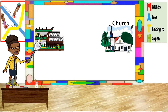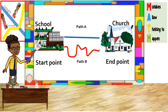In this picture, the start point is the school and the end point is the church. How many paths do you see? There are two paths — a straight path and a curved path. Let us use points to check which path is shorter. We are going to count the points from the start point to the end point on each path.